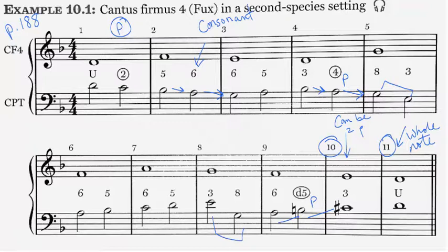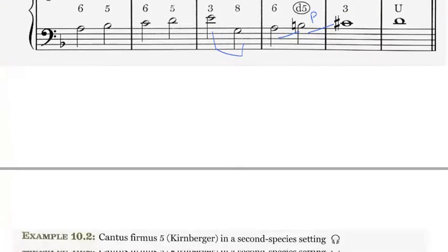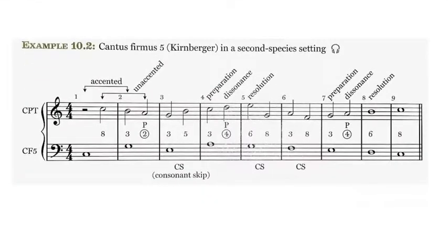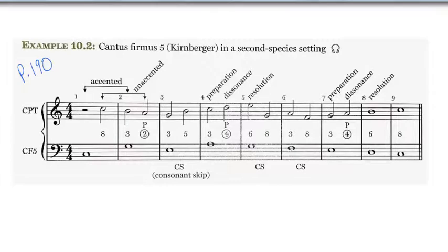Let's continue on to the next example, which is example 10.2 on page 190. So now we're on page 190. And here we see another counterpoint. And we see a little more detail about passing tones and consonant skips. Let's go ahead and listen to this example.